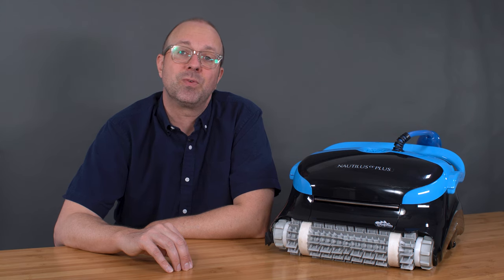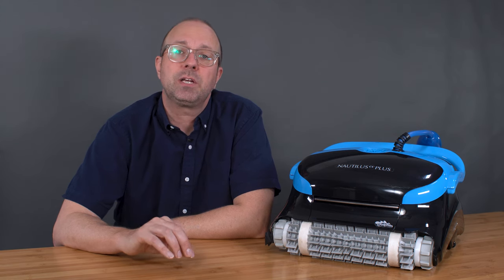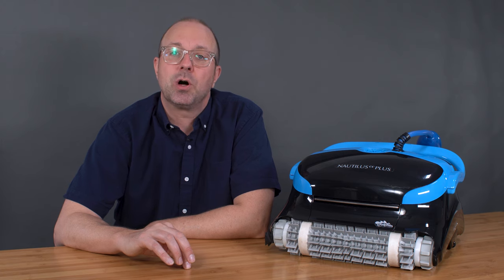The Nautilus CC Plus is a robot sold mostly on Amazon, and it's missing a few features. It cannot clean your waterline, does not have an ultra-fine filter capable of removing small debris, and can only clean pools up to 40 feet.